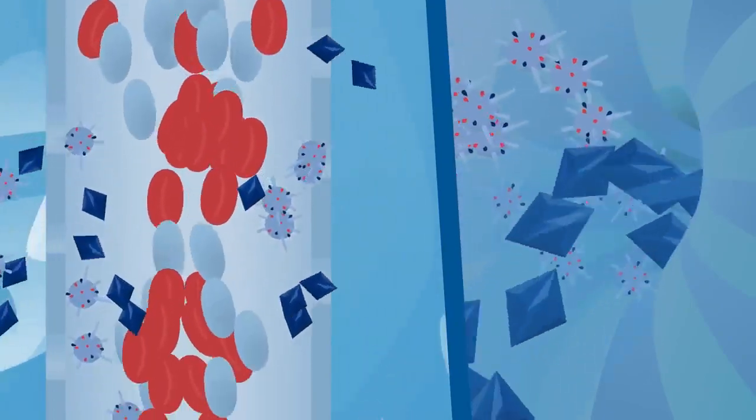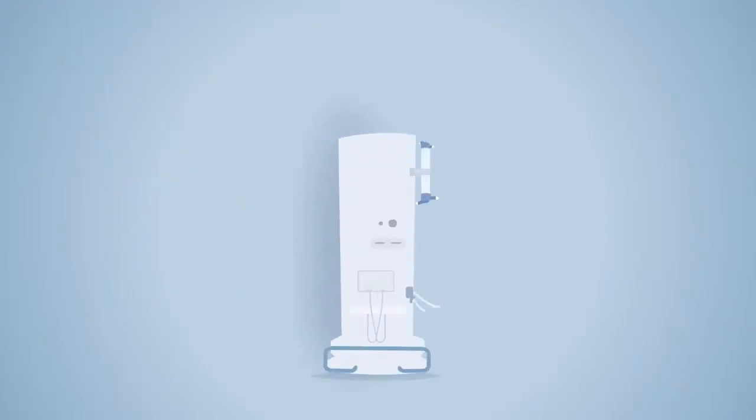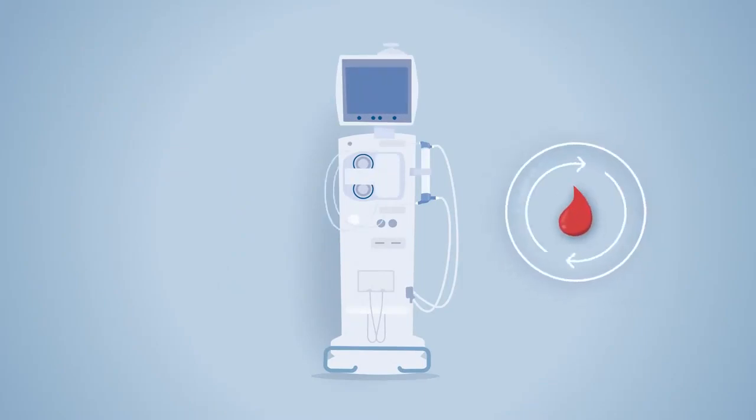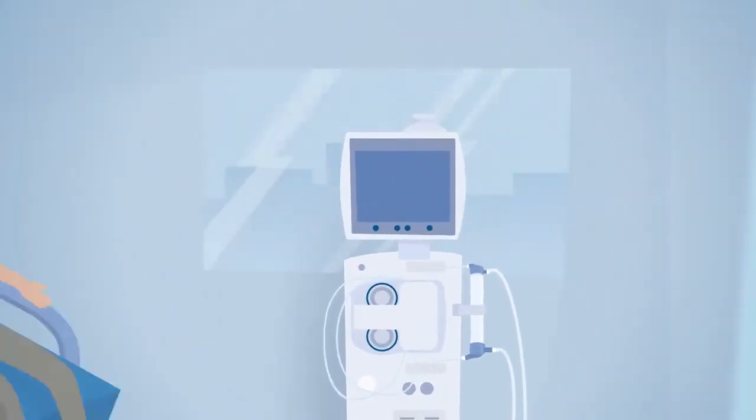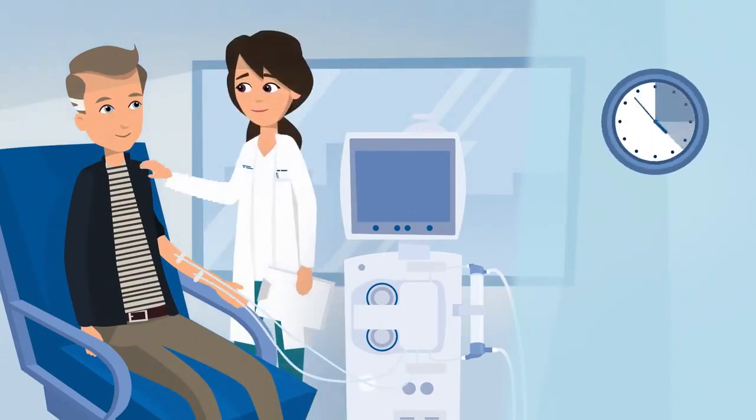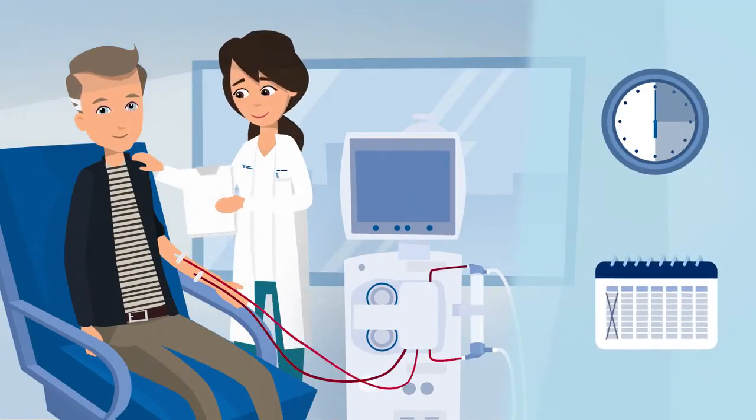As the blood cleansing process proceeds inside the dialyzer, a dialysis machine pumps the blood, administers anticoagulants and monitors circulation. A treatment can take from 3 to 6 hours, usually 3 times a week.